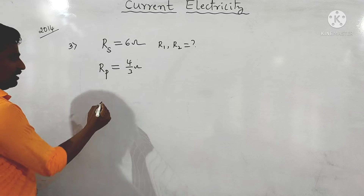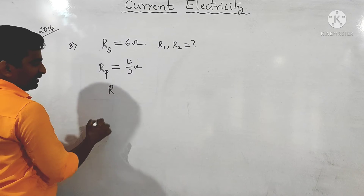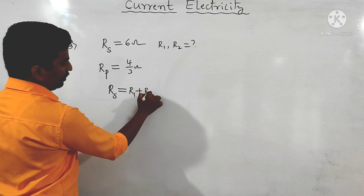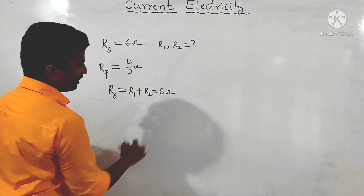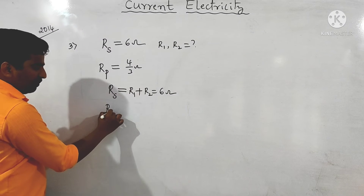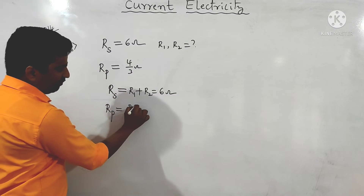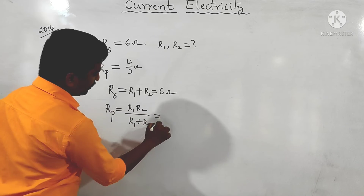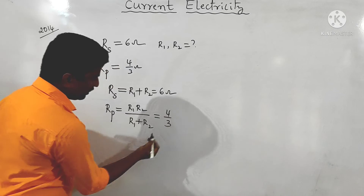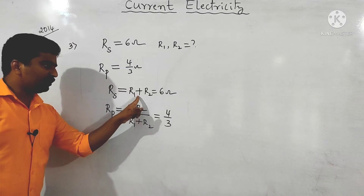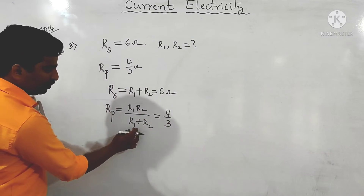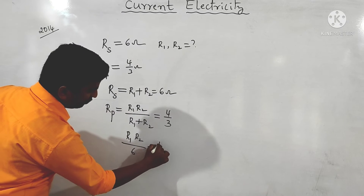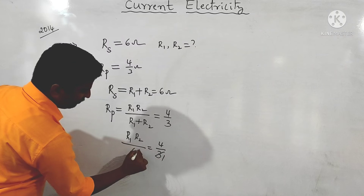In series: R1 + R2 = 6 ohm. In parallel: R1 × R2 / (R1 + R2) = 4/3. Therefore R1 × R2 / 6 = 4/3, which gives R1 × R2 = 8.